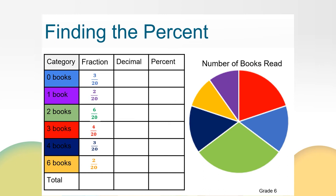Now let's look at the decimal and percent of students that read 1 book. What decimal and percent is equivalent to 2/20ths? You might have simplified 2/20ths to 1/10th, or maybe you used your calculator. 2/20ths is equivalent to 1/10th, or 10 hundredths, and 10%. 10% of the students read 1 book. We can see that 2/20ths of the students read 6 books too, so we'll represent that with 10%.